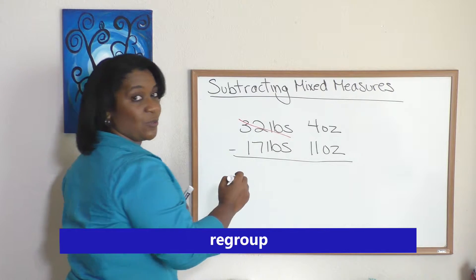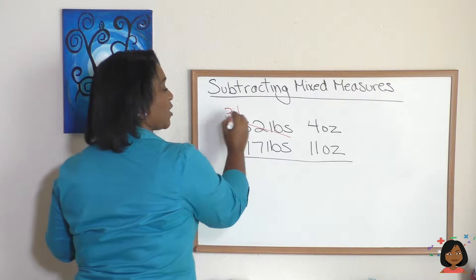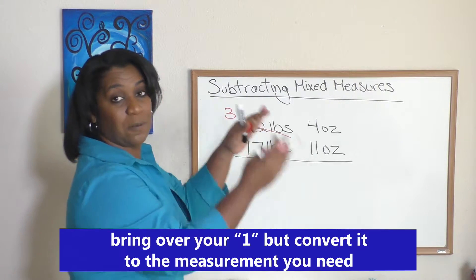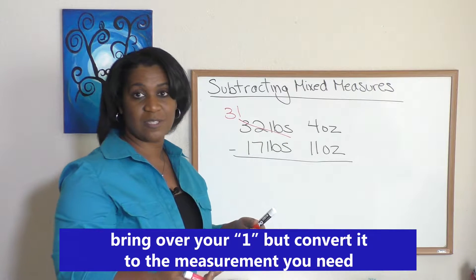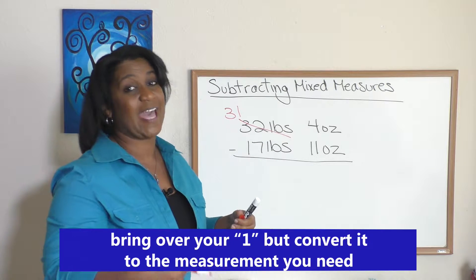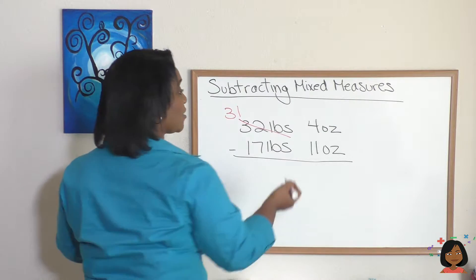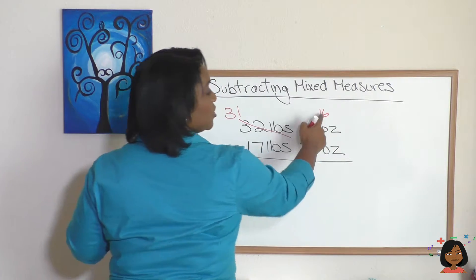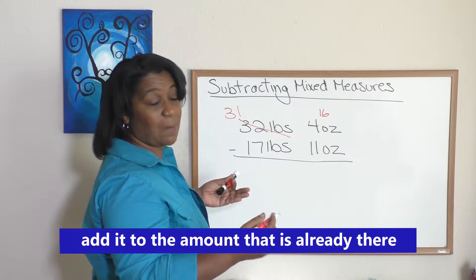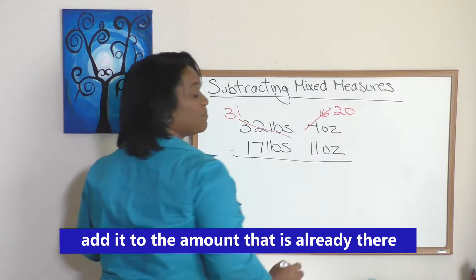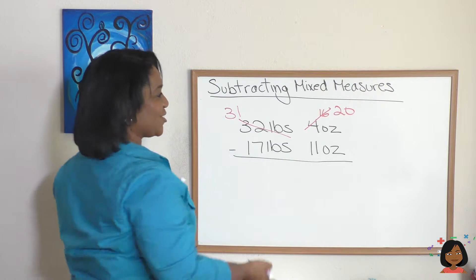But we need to convert it into ounces first. Well, 1 pound is 16 ounces, so we're gonna add 16 to this 4 and that's going to be a total of 20 ounces. Now we can do our subtraction. 20 minus 11 is 9 ounces.